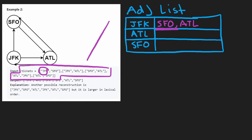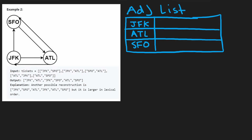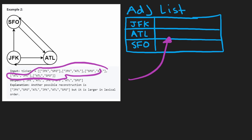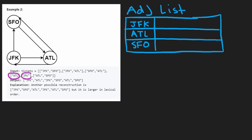Going through the sorted ticket list: first is ATL, with JFK as a destination, and also SFO as a destination. Next is JFK, with ATL as a destination and also SFO. And then SFO, which only has one destination: ATL. So now we have our adjacency list built from the sorted tickets, and we're going to start running our DFS.